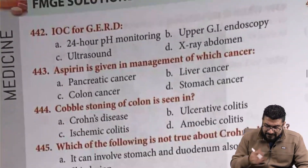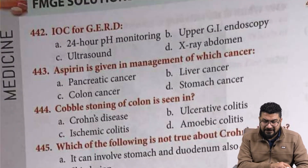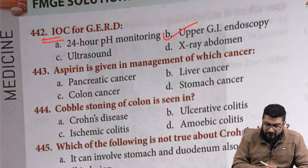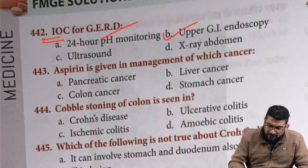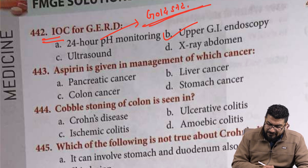Moving to next: the question asks investigation of choice — answer will be upper GI endoscopy. Gold standard test will be pH monitoring.